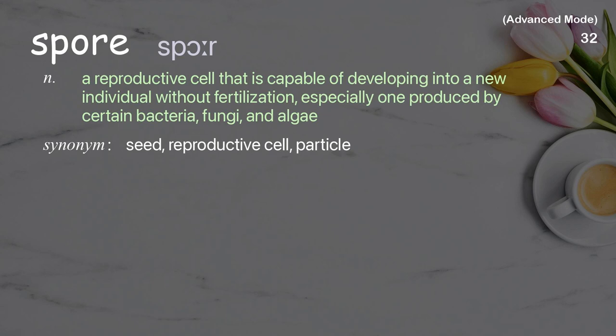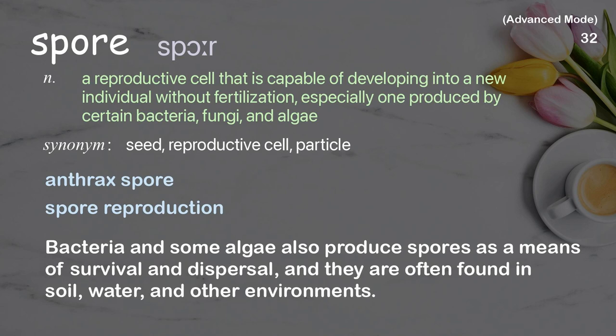Spore: A reproductive cell that is capable of developing into a new individual without fertilization, especially one produced by certain bacteria, fungi, and algae. Examples: Anthrax spore, Spore reproduction. Bacteria and some algae also produce spores as a means of survival and dispersal, and they are often found in soil, water, and other environments.